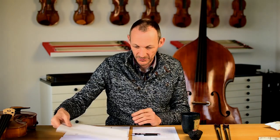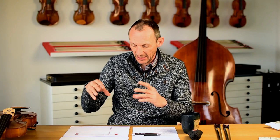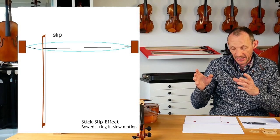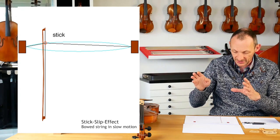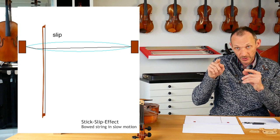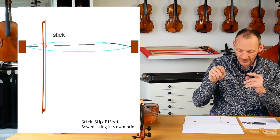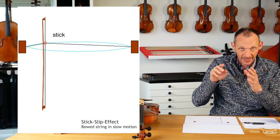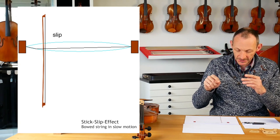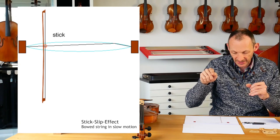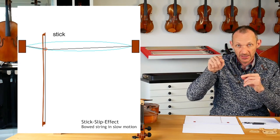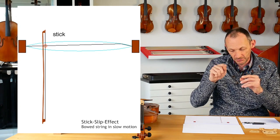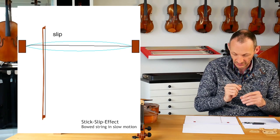When we put this video into an animation, it looks like this. Here you can see the stick-slip effect really nicely, where there's a red circle. The bow hair sticks to the string, and then when the kink moves between the contact point and the bridge, it slips. Then the bow catches the string again, and so it goes round and round.